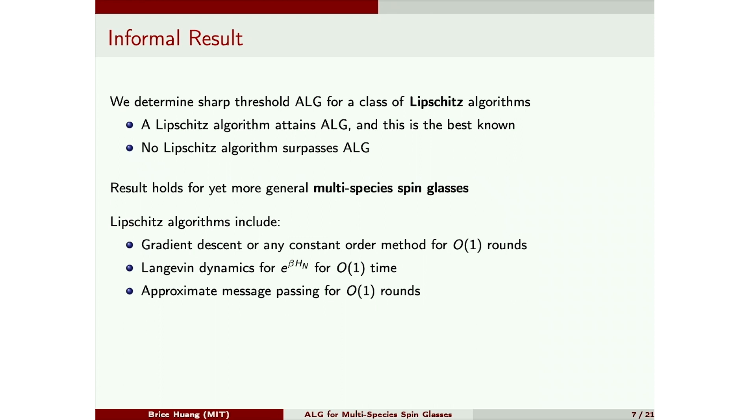So Lipschitz algorithms include many of our favorite algorithms, like gradient descent, Langevin dynamics, approximate message passing, and in fact, any constant round method for constant time. This does not yet include low-degree polynomials or sum of squares algorithms. And if you have ideas for showing hardness for these classes of computation, let me know. I'd be very excited. But let me say, I do think that there is hope for generalizing this hardness result to larger classes of computation. So our proof of hardness actually works for algorithms with a more general overlap concentration property. And Lipschitz is only used to get overlap concentration. You'll see what I mean in a few slides.